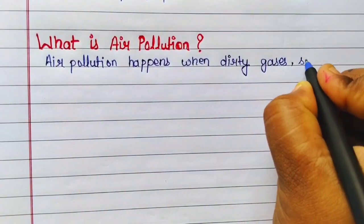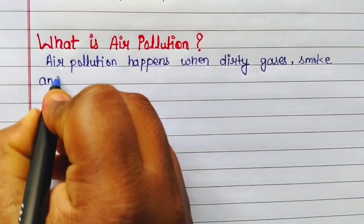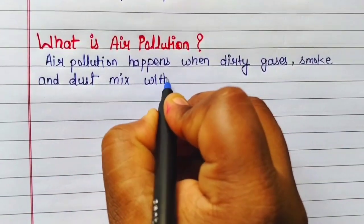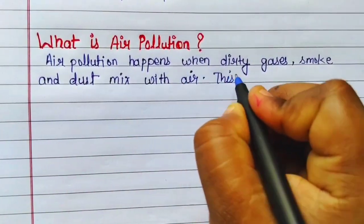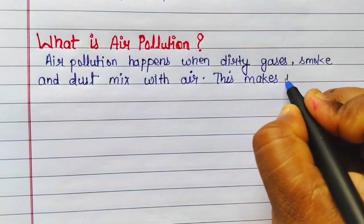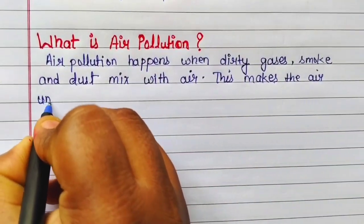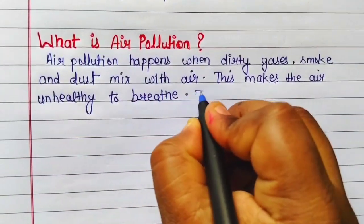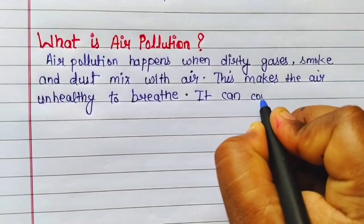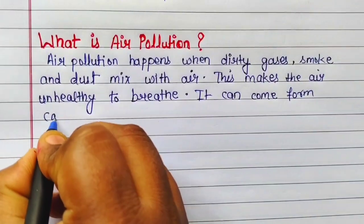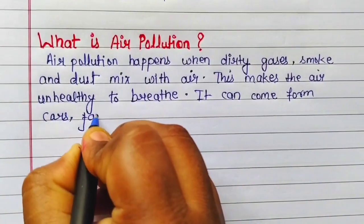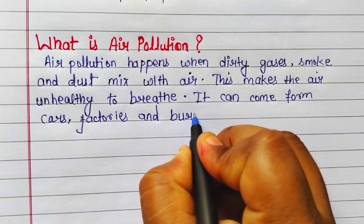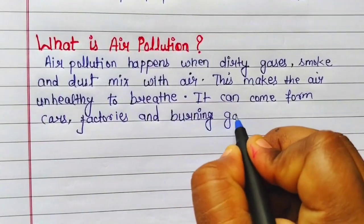What is air pollution? Air pollution happens when dirty gases, smoke and dust mix with air. This makes the air unhealthy to breathe. It can come from cars, factories and burning garbage.